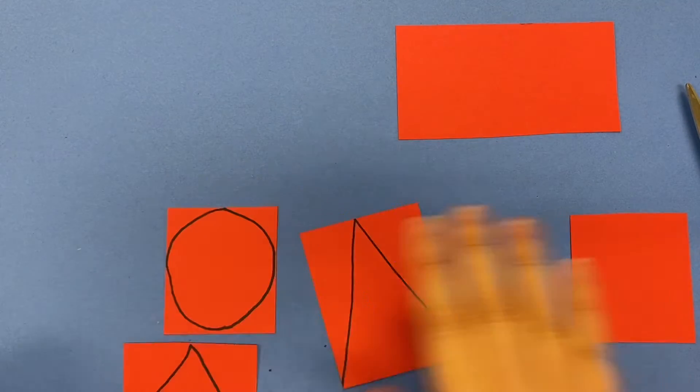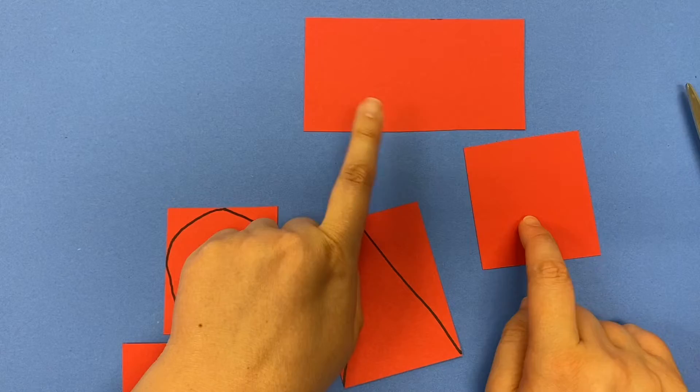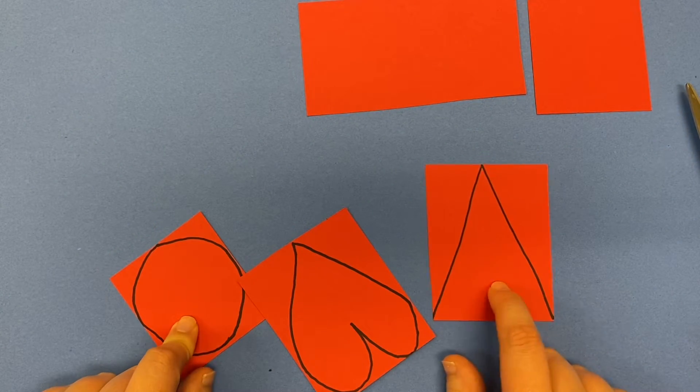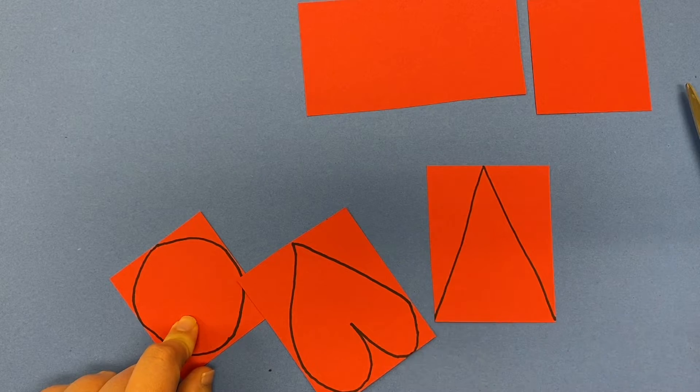The ones that I've already, that I'm just going to keep, rectangle and square, I'm good. I need to cut out these three. So I'm just going to cut on the black lines.